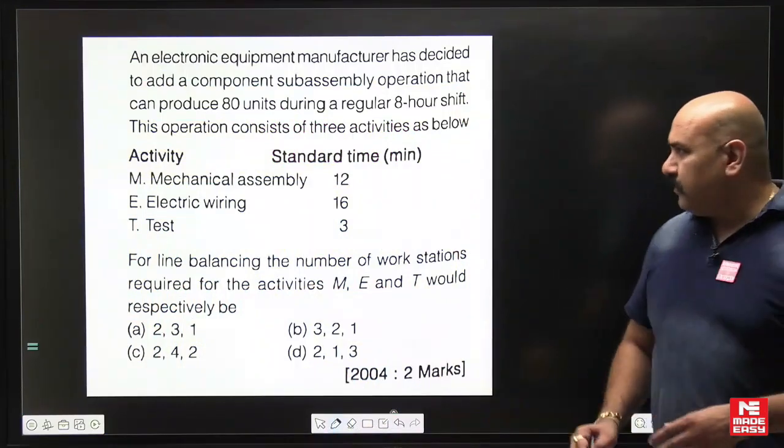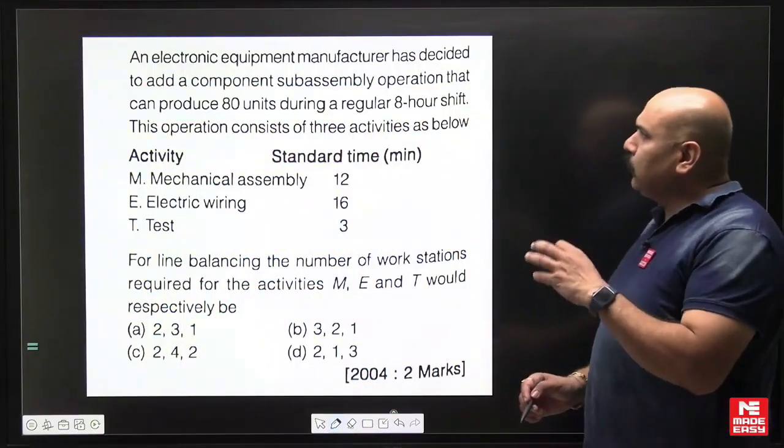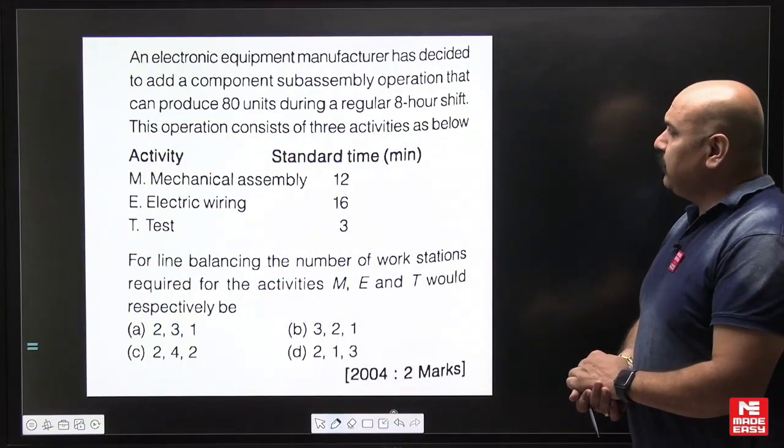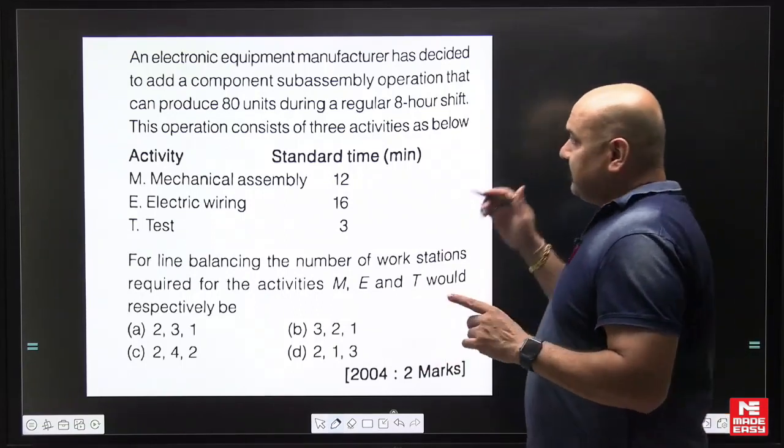An electronic equipment manufacturer has decided to add a component subassembly operation that can produce 80 units during a regular 8-hour shift. First of all, this is the data through which they have given the cycle time.